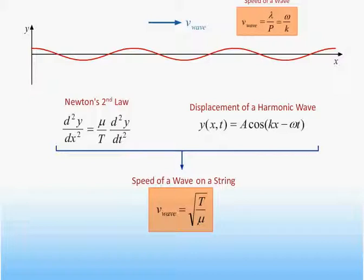The velocity is indeed determined by the medium. It does not depend on the frequency, the wavelength, or the amplitude of the wave itself. For example, if we double the frequency of a wave, its wavelength will decrease by a factor of two, keeping the speed of the wave the same.